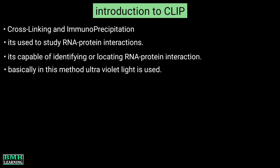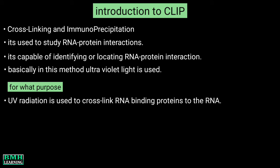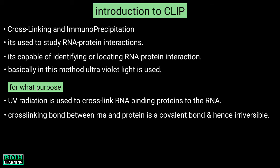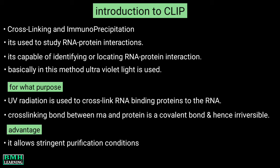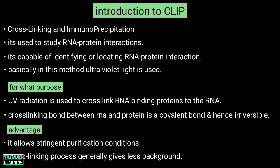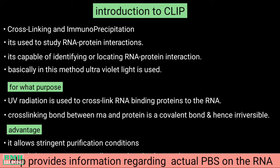Basically in this method, ultraviolet light is used — the UV radiation is used to cross-link RNA binding proteins to the RNA. The cross-linking bond formed between the RNA and protein is a covalent bond and hence irreversible. This chemical structure comes with an advantage: it allows stringent purification conditions, and the cross-linking process generally gives less background. In this way, the technique provides information regarding the actual PBS or protein binding site on the RNA.